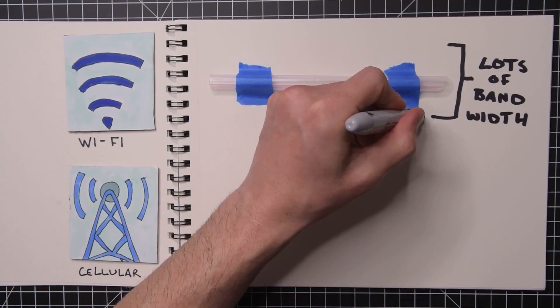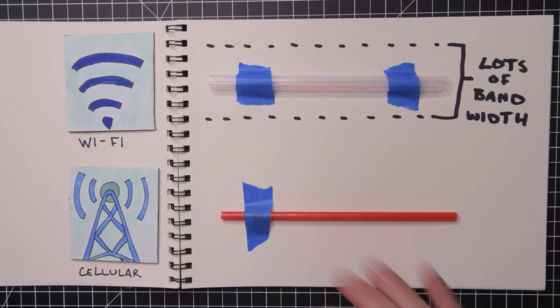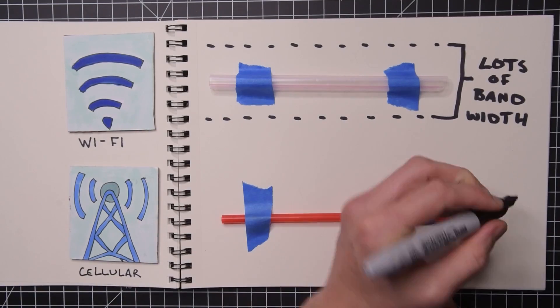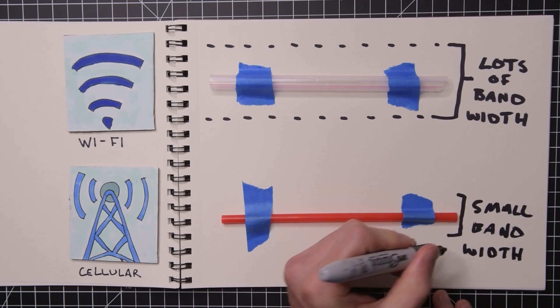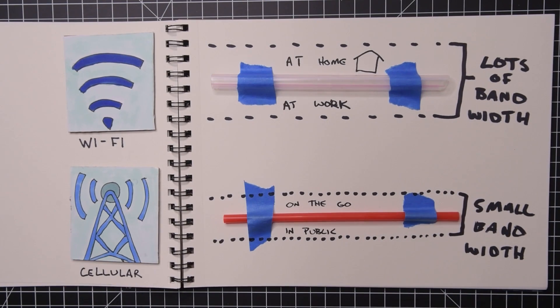Think of it as a soda straw. Wi-Fi would be a really big thick straw — you'd be able to drink a lot fast. But cellular, it's going to be a smaller straw. You're not going to be able to drink as much as fast, but you'll still be able to drink.